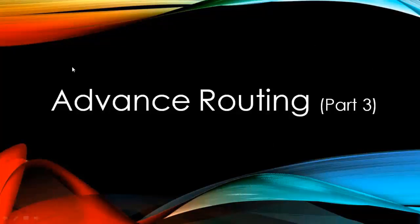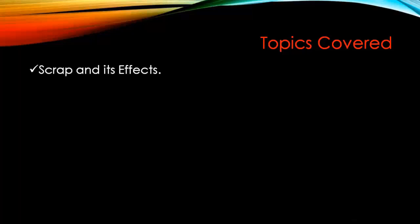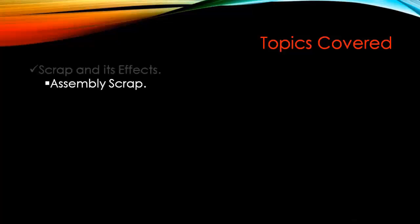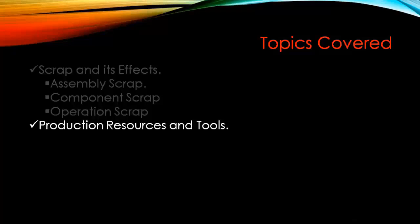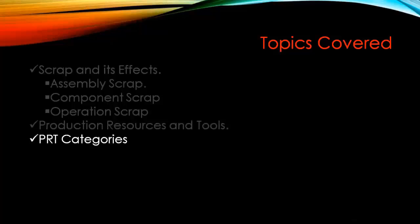Next we're going to start the third part of advanced routing. The topics we're going to cover are scrap and its effects, and within scrap there are three types: assembly scrap, component scrap, and operation scrap. We'll also cover production resources and tools and PRT categories.